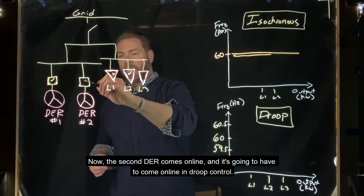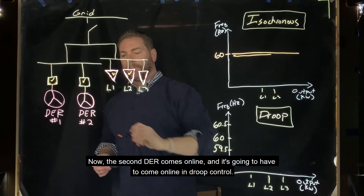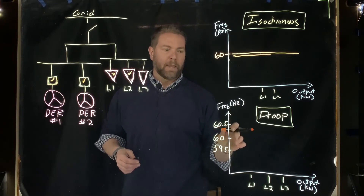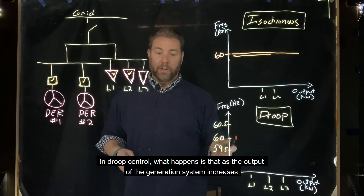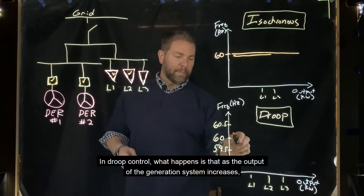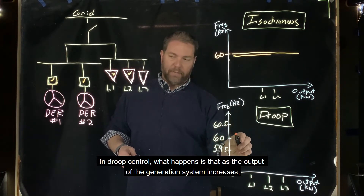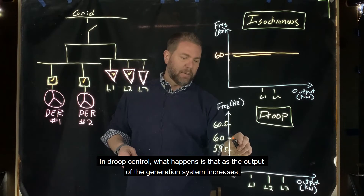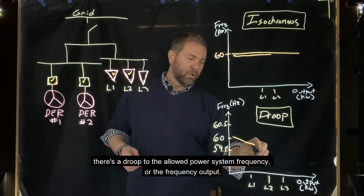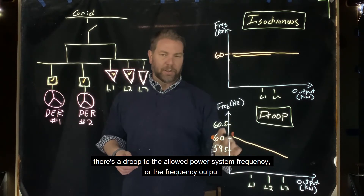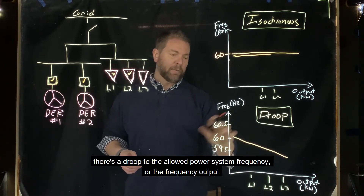Now the second DER comes online, and it's going to come online in droop control. In droop control, as the output of the generation system increases, there's a droop to the allowed power system frequency, or the frequency output.